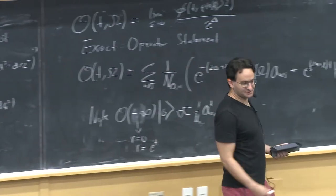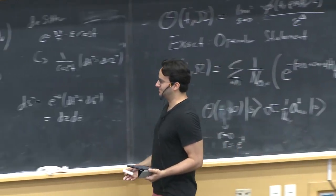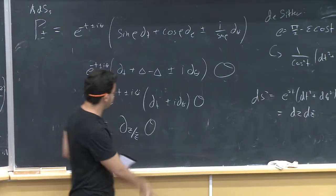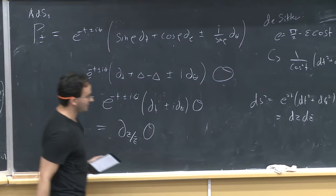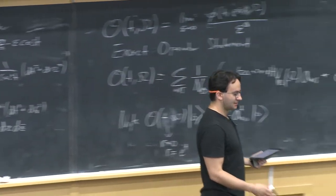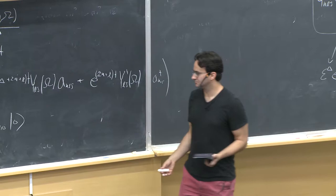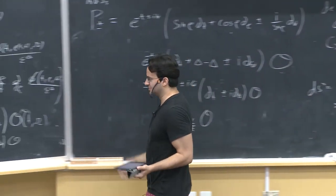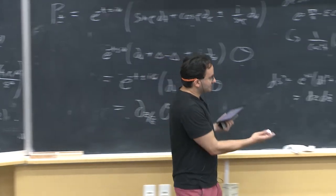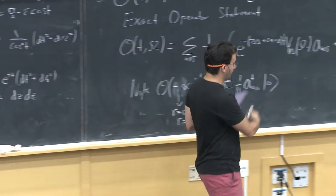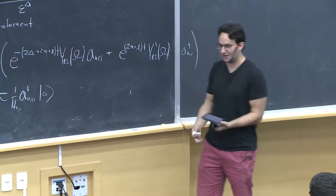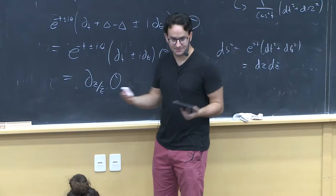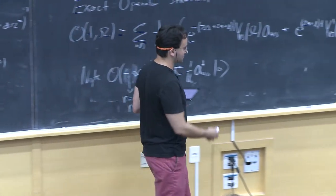Rotations are very simple—d/dθ doesn't do anything funny. We could also obtain the special conformal generators, which are a little bit trickier. Going through all of these, we prove that O transforms like a conformal primary in a CFT. The next question is about the correlation functions of O. Since we have a quantum system where O transforms like a primary, the two-point function must be consistent with conformal field theory—it's completely fixed up to an overall constant. So we know the correlation functions of O must be correct.